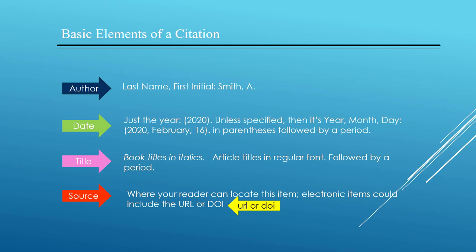These are the building blocks of every single citation. In APA style, author names are listed last name first, followed by a comma and then first initial. Dates are usually just the year, unless specified for the type of material you're citing. Book titles are italicized while article titles are not. Titles have only the first word and any proper nouns capitalized — all other words are lower case.